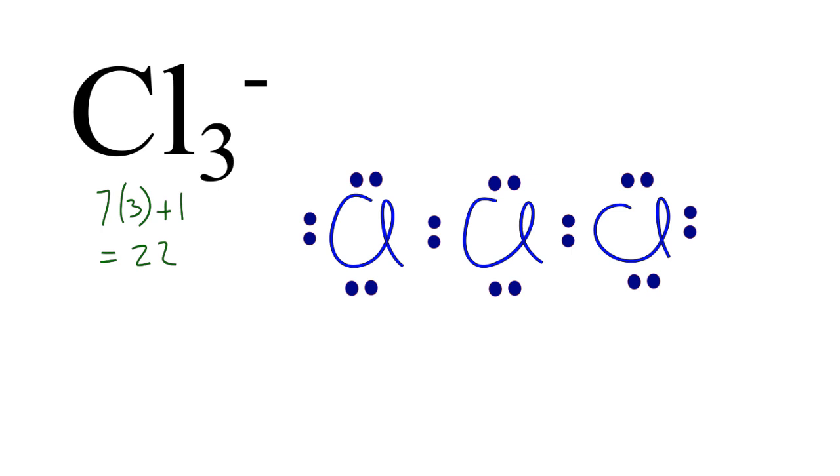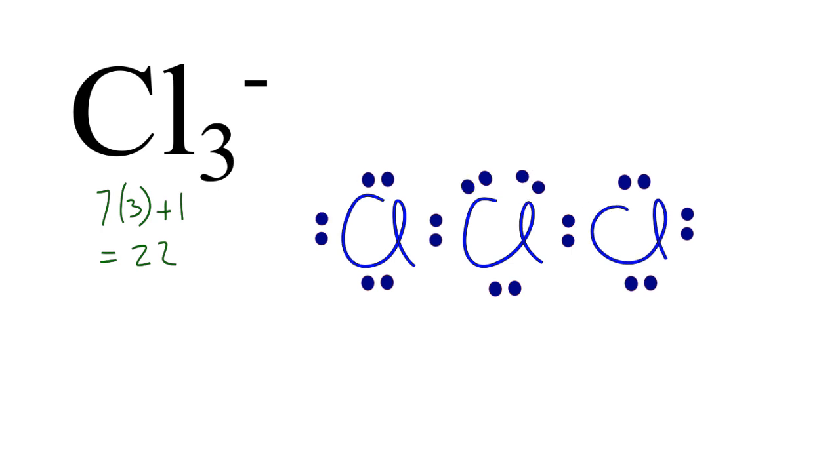That's okay, because chlorine can have an expanded octet, more than eight valence electrons. So we can take those remaining two valence electrons and place them on the central chlorine atom. Put them up top here, and then rearrange things. So now we've used all 22 valence electrons, and we have an expanded octet on the central chlorine. That's okay.